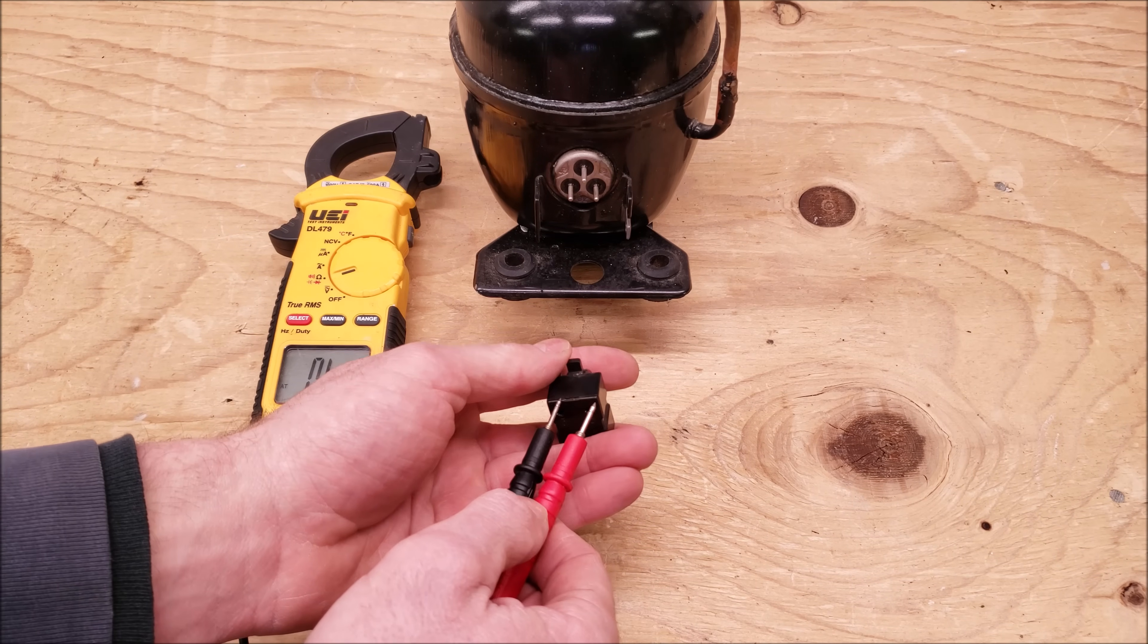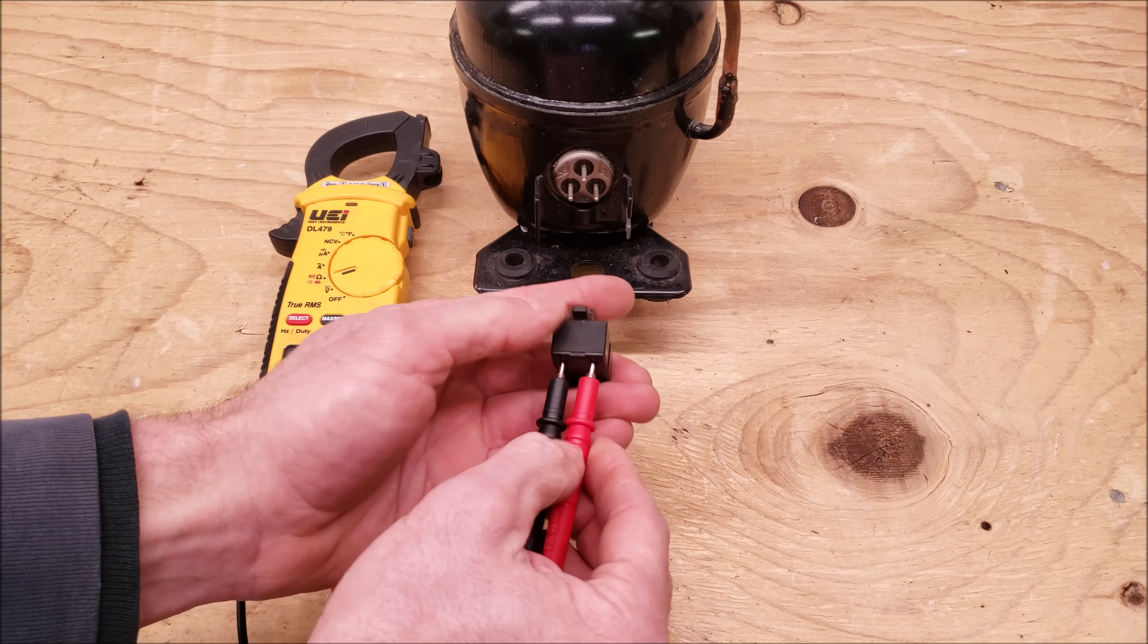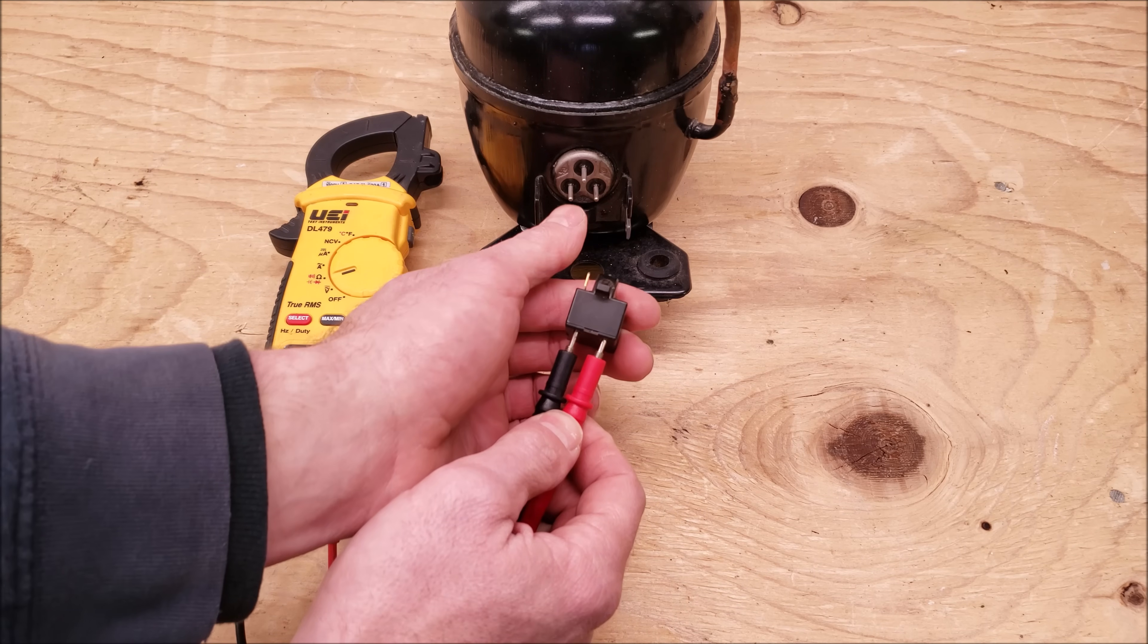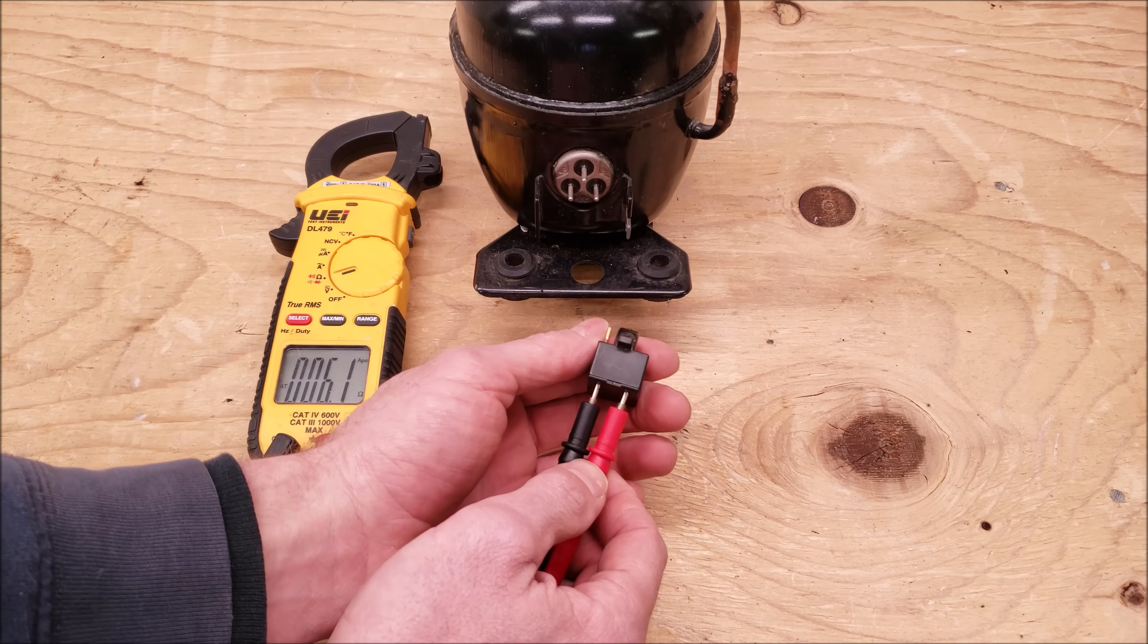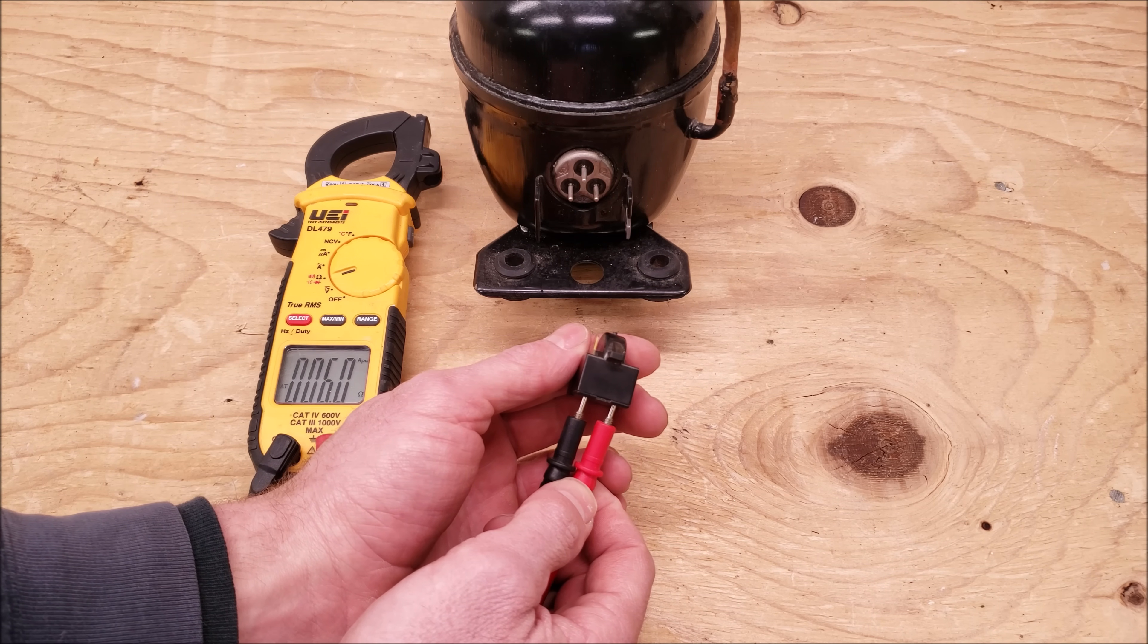So right here we have the multimeter set on resistance and we're going to go ahead and check inside these taps right here which connect the start winding to the run winding. And you see that we're reading six ohms of resistance.